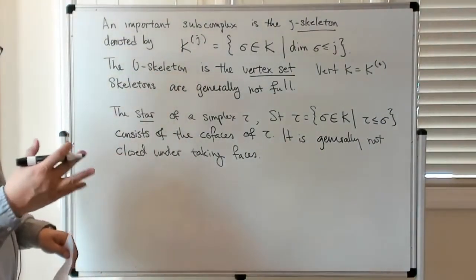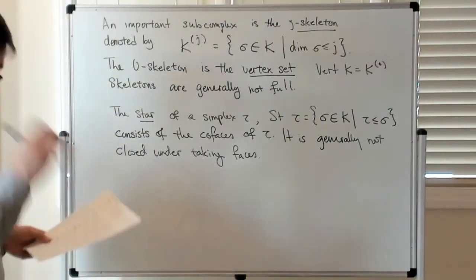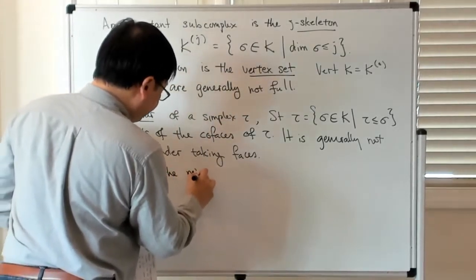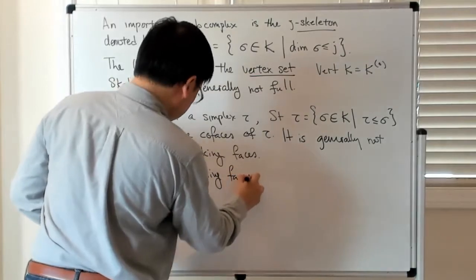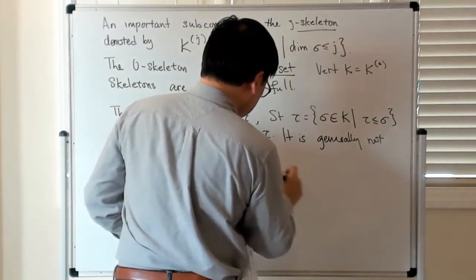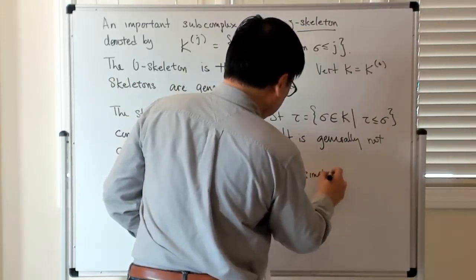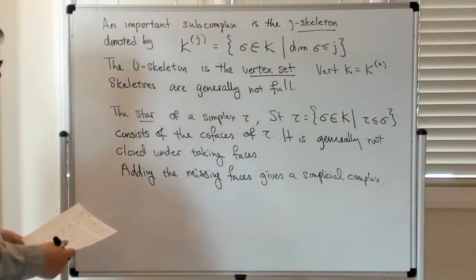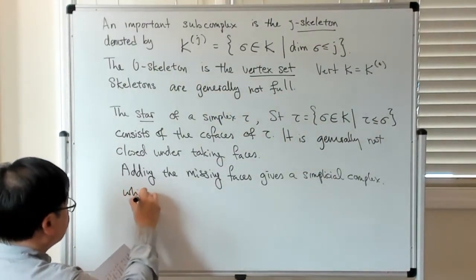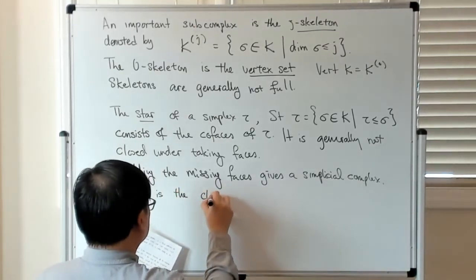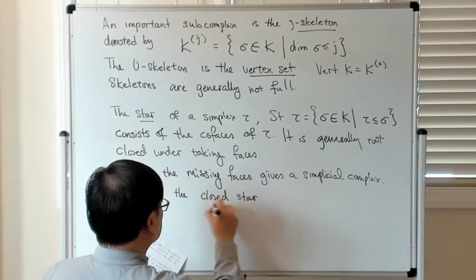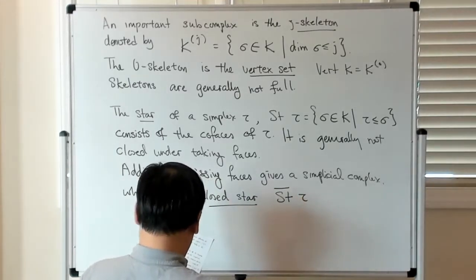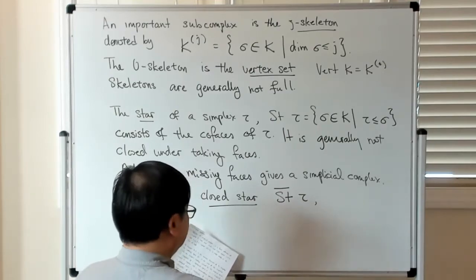What you can do is add the missing faces so that you get a complex. Adding the missing faces gives us a simplicial complex which we refer to as the closed star, denoted st-bar of tau, which is the smallest simplicial complex that contains the star.